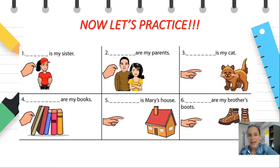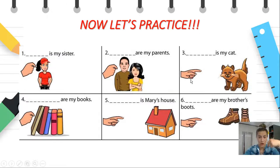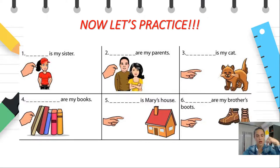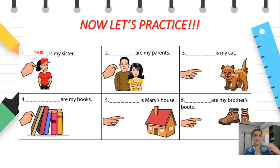Now let's practice. We have six pictures over here. One type of hand means things are near, and the other type shows things are far. What goes best with this sentence: blank is my sister? First, is 'sister' singular or plural? Yes, it is singular — one sister. Is it near or far? We see by the hand that it's near, so we say: This is my sister. She is near to me, I'm pointing to her — this is my sister.